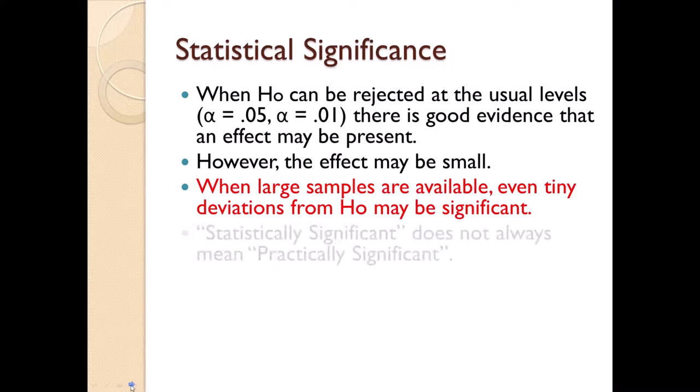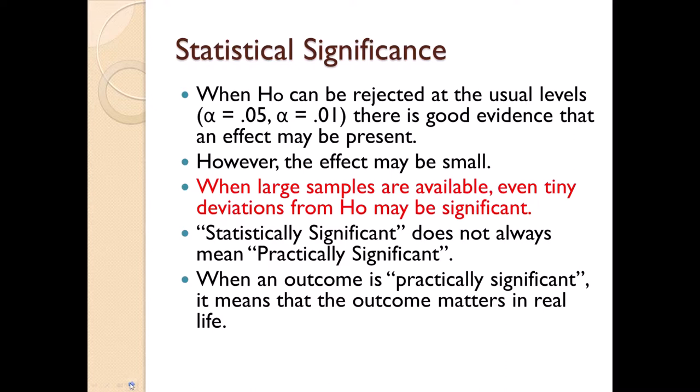So statistically significant does not always mean practically significant. You may look at a difference between what your H0 value is and what your sample outcome is and say, just by looking at that, that's not too big of a deal. But even so, I'm getting a small p-value, which kind of is trying to force me to reject. It's probably because your sample size is way too big, and what happens is your curve grows really tall and skinny at the center, and the tails collapse. So you just don't have really a whole lot of area there in order for you to get a big p-value. When an outcome is practically significant, it means that that outcome really does matter in real life.